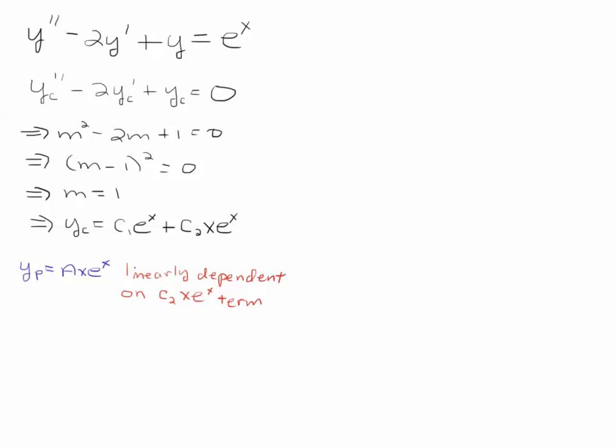And so, if we were to guess a particular solution of Axe to the x, notice that it'd be linearly dependent upon this term here. So, we're going to assume a particular solution that is one degree higher than that. So, we're going to go with Ax squared e to the x. And then we're going to see how this works out.